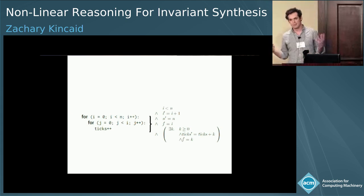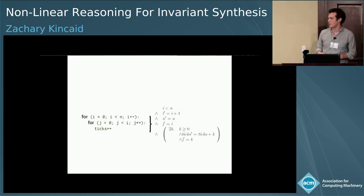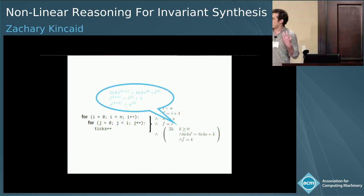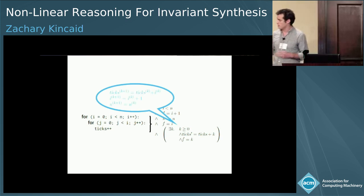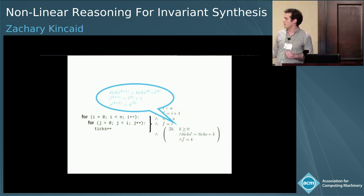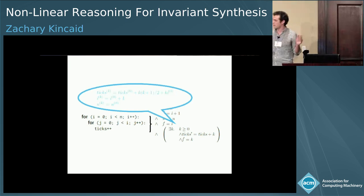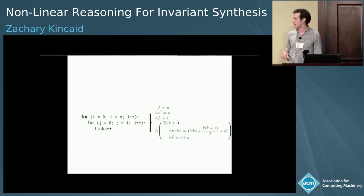This now doesn't look so much like a system of recurrences — we have an existential quantifier, and I can't describe the exact behavior of the j variable. A system of recurrences I might want to extract is something like this. I'm not describing the exact behavior, just an approximation. These systems of recurrences can be interdependent — the recurrence for ticks depends on i — but this is something recurrence solvers can handle. I get a nice quadratic closed form and can prove this executes in quadratic time.